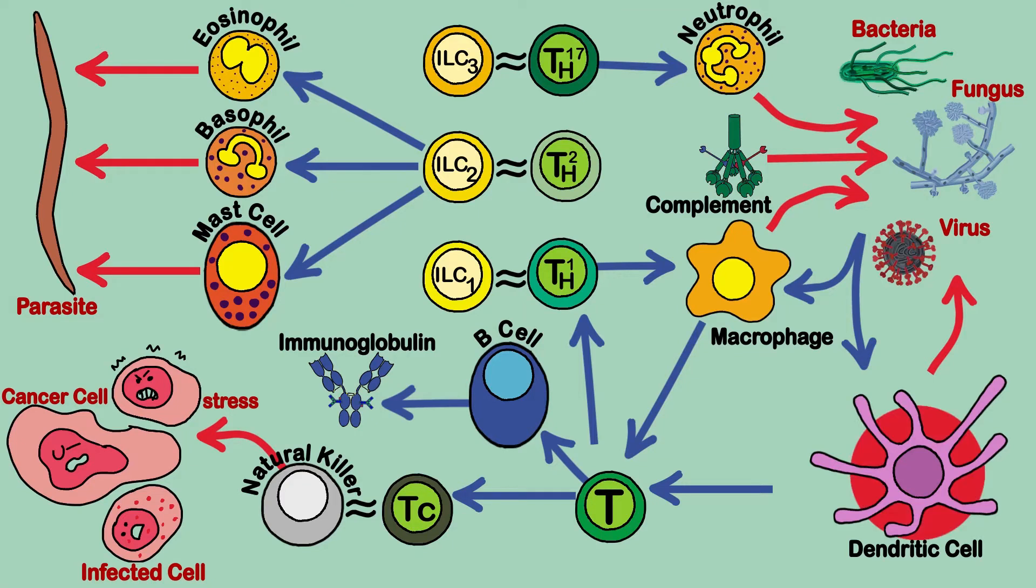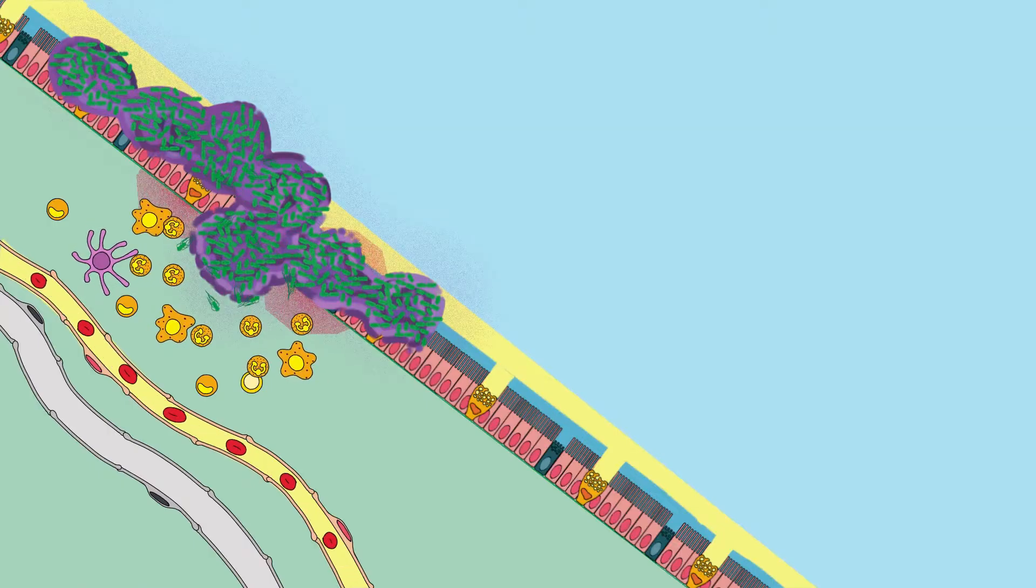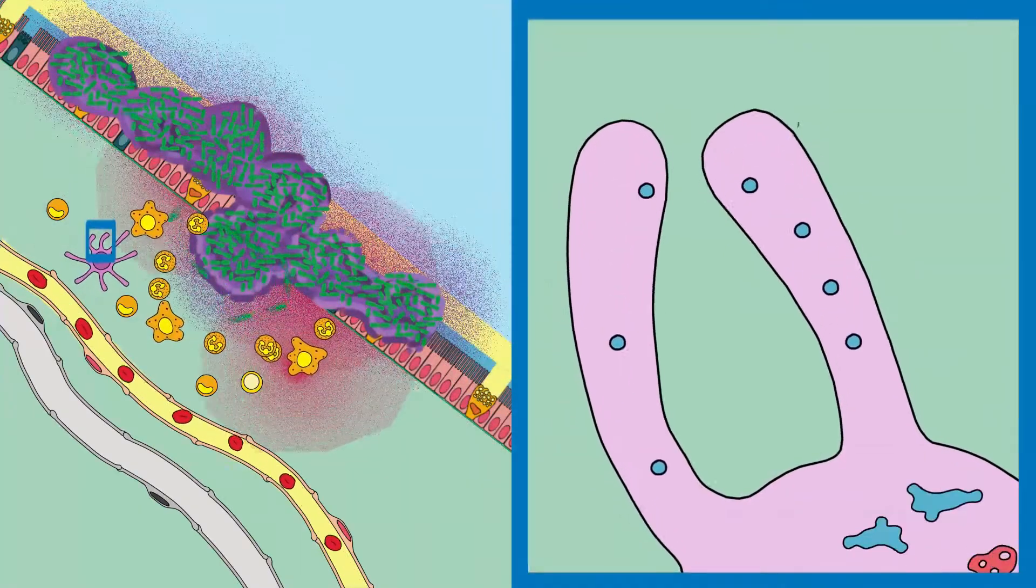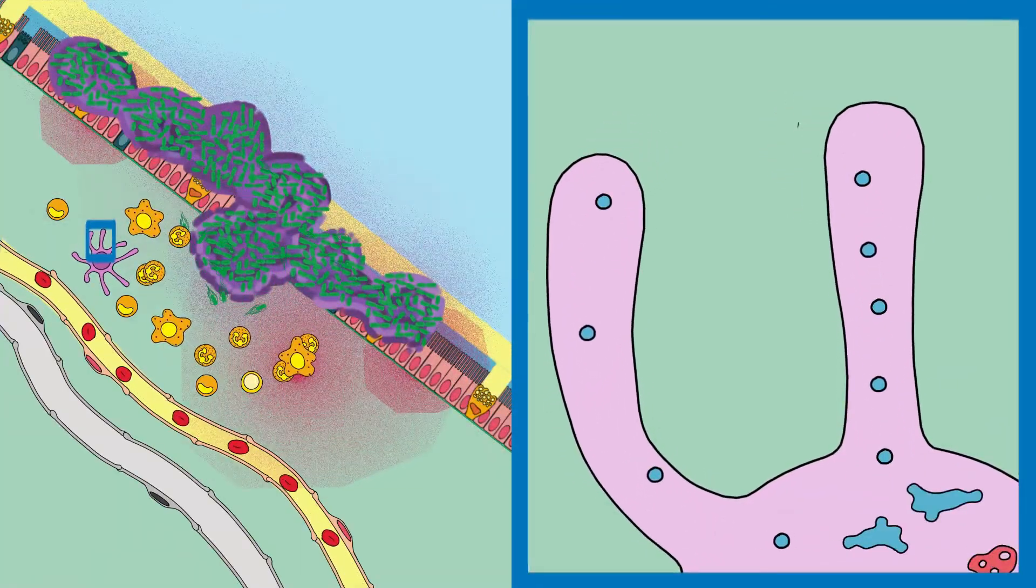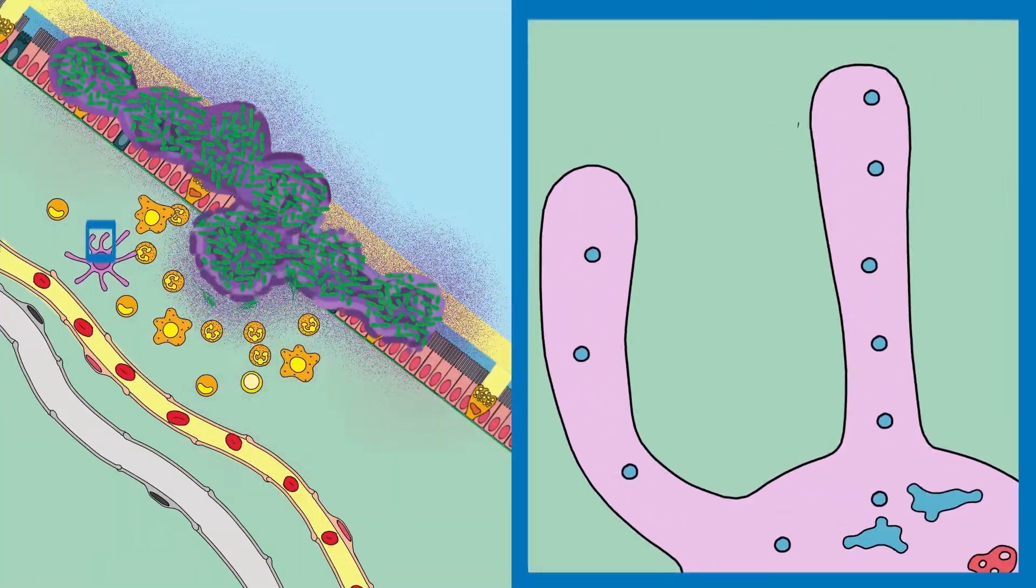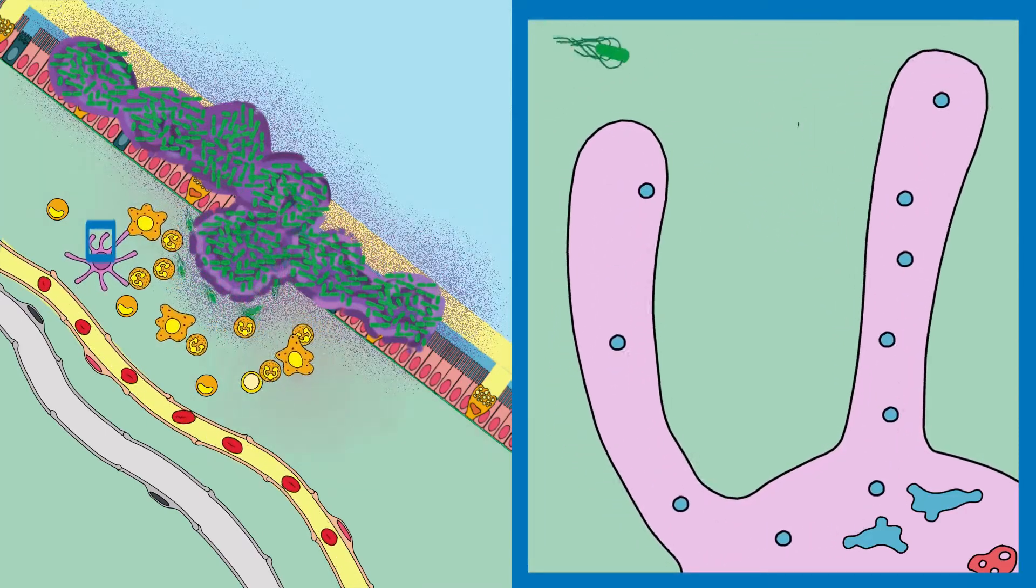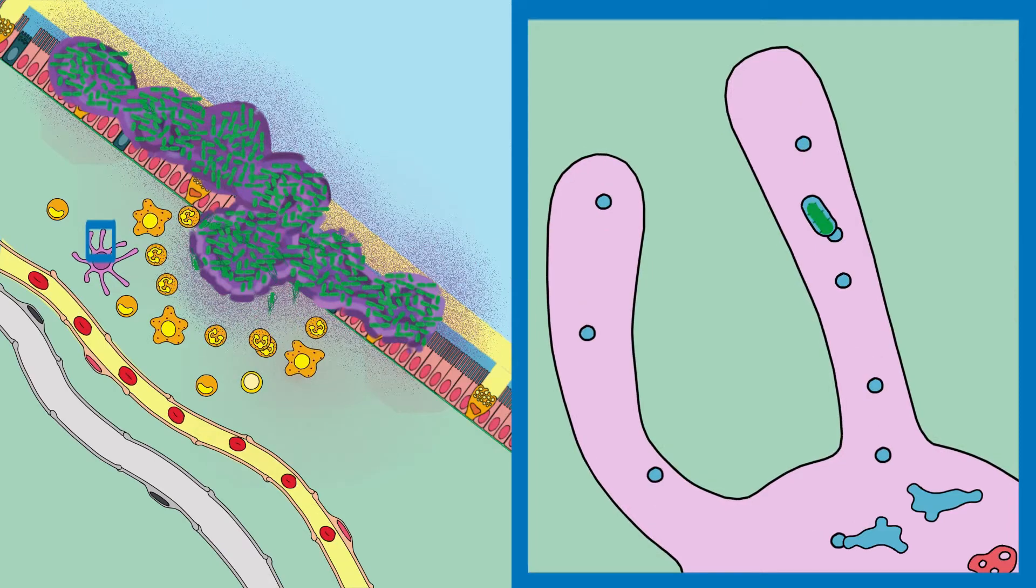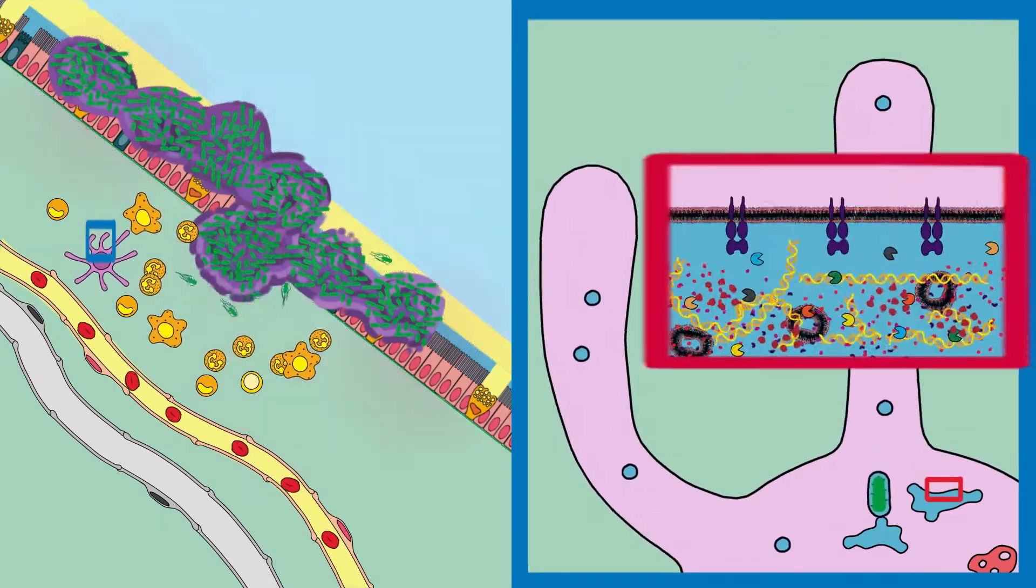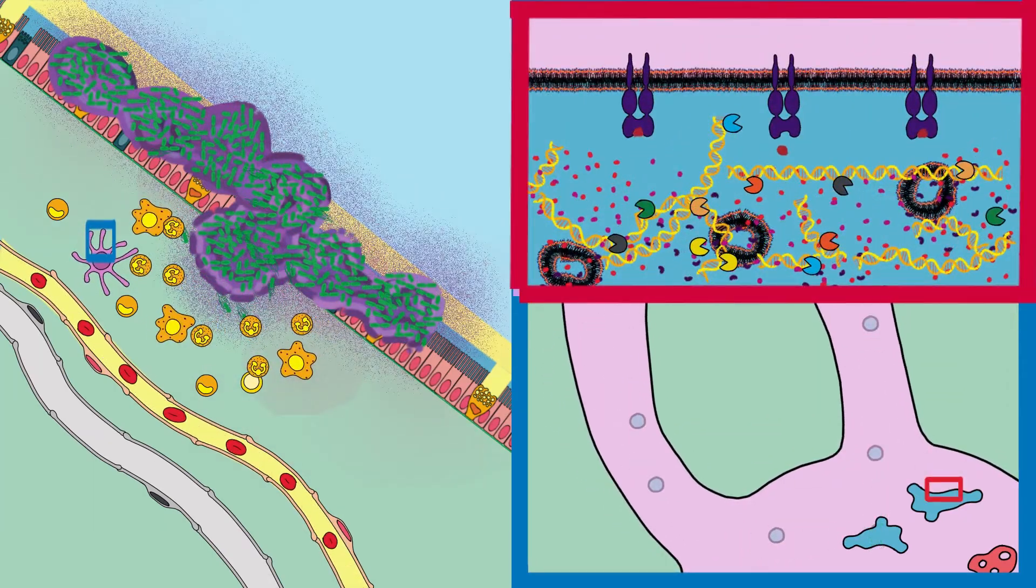Dendritic cells are cells that are found in almost all tissues, engulfing large amounts of molecules that are found floating in the extracellular fluid by a process called macropenicytosis. Dendritic cells can also engulf pathogens, but their main function is to obtain samples of molecules in tissues and decide whether to awaken the adaptive immune system.